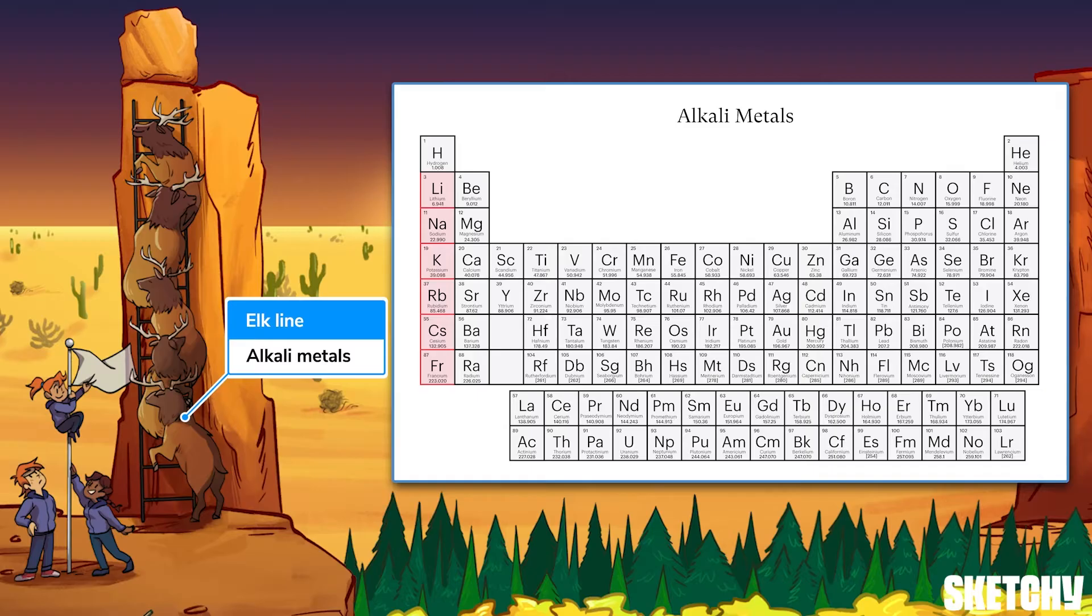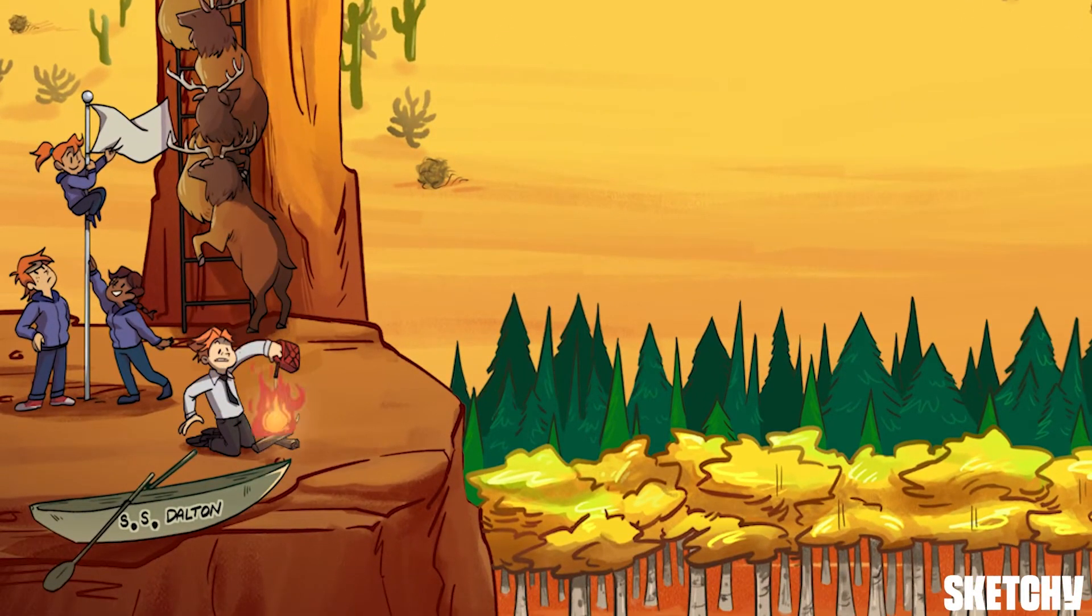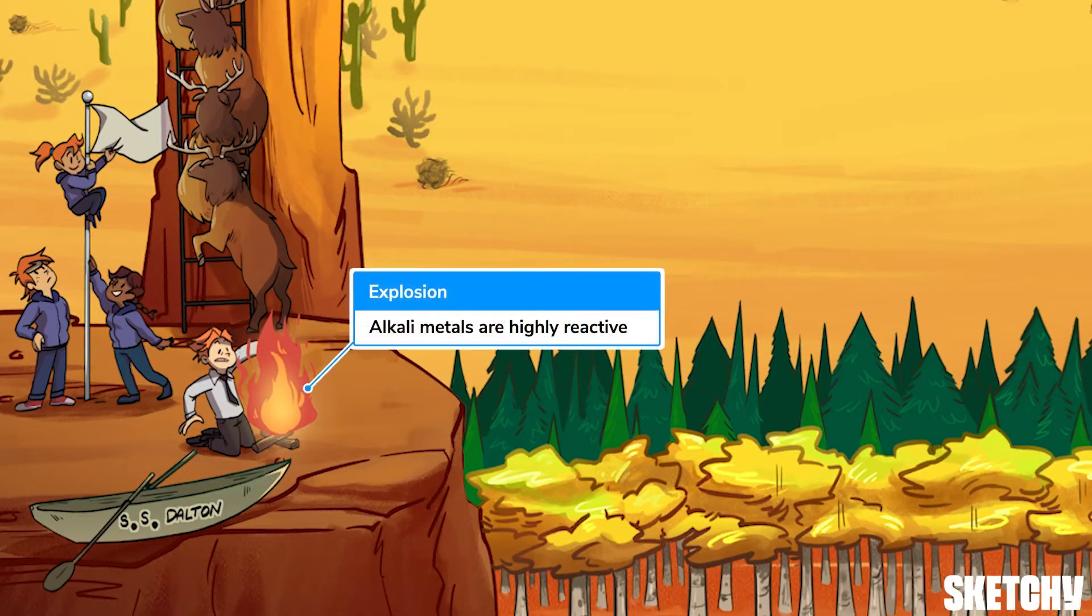Anyways, alkali metals are usually found in compounds as salts, such as sodium chloride. You won't find them as free elements. The alkali metals are also really, really reactive. Just like this lighter fluid Mr. Dalton is brilliantly tossing onto his campfire. In fact, these are the most reactive elements. They even react explosively with water. Okay, well, I see where the kids get it from. I hope Mr. Dalton wasn't too attached to his eyebrows.